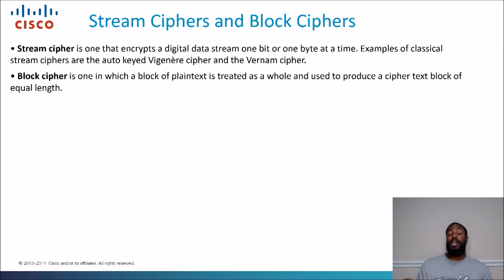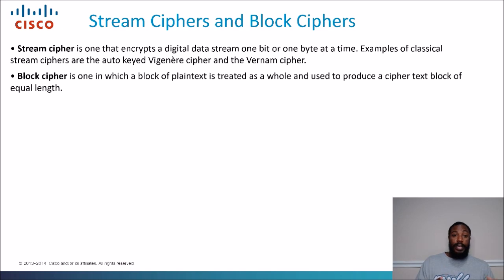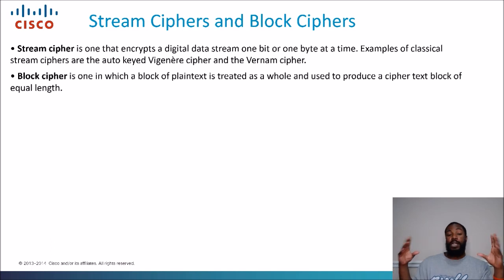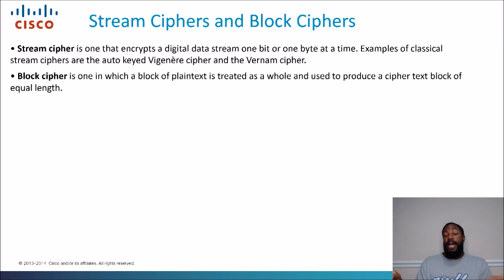The difference between stream ciphers and block ciphers: a stream cipher takes parts of the data one bit at a time and turns it into ciphertext. A block cipher takes a whole block of plain text and produces a ciphertext block of equal length. Stream cipher does it little by little; block cipher does it in whole blocks. Nowadays, most encryption methods use block cipher.